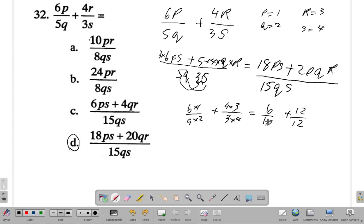6 tenths is the same as 3 over 5, but 6 tenths is 0.6 plus 1 which is 1.6. Now which one of these work out like that at 1.6? If you try 10 times p which is 1 times r which is 3 over 8 times q which is 2 times s which is 4, that would give you 30 over 64.